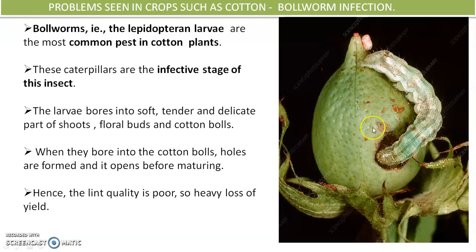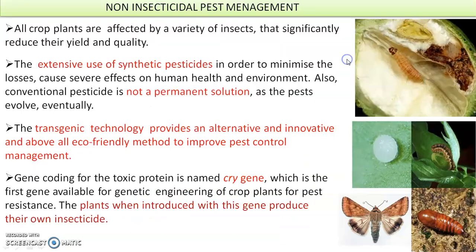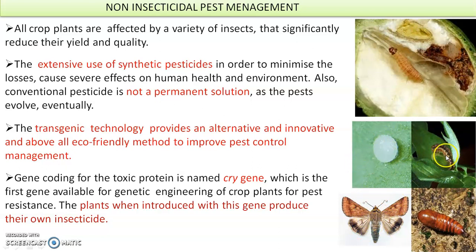The cotton lint developing inside will not develop well. When larvae bore into the cotton bolls, holes are formed and it opens the boll before maturing — it should mature for good cotton yield. Because it opens before maturing, the lint quality is very poor, resulting in a heavy loss of yield. This problem is not only with cotton but with many crops affected by a variety of insects that significantly reduce yield and quality.